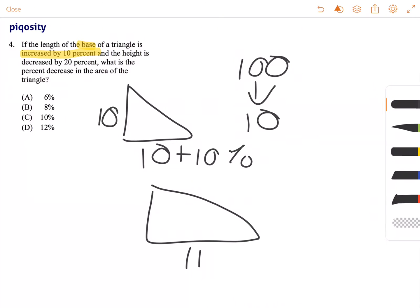And for the second part of this problem, the height is decreased by 20%. 10% of 10 as we already said is 1, so if we are decreasing it by 10% and then another 10% for 20% total, we are subtracting 2 from 10. So the measurements of our new triangle are: the height is 8 and the base is 11.